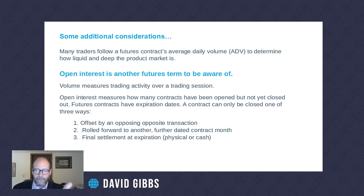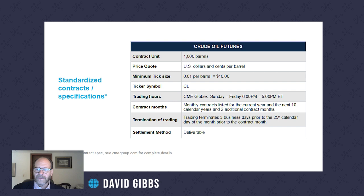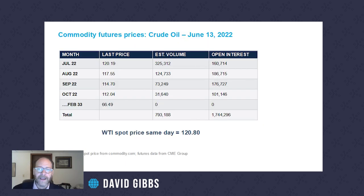If you want to maintain exposure but expiration is approaching, you can roll your position forward by doing a calendar spread — offsetting the existing position and simultaneously creating a new one in a deferred contract month. Every CME contract has its own contract specifications and rule book describing the product, how it works, how it's quoted, when it trades, when it terminates, and its final settlement value. You can find these at cmegroup.com under our markets.